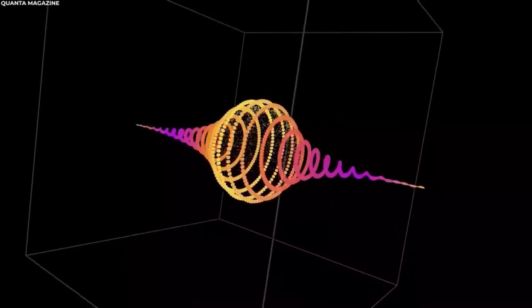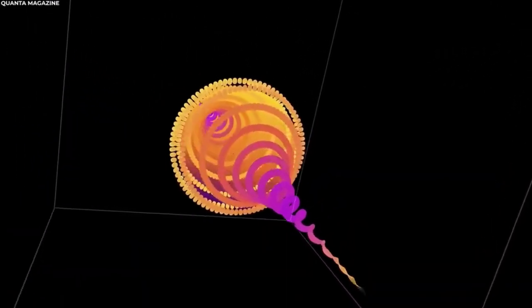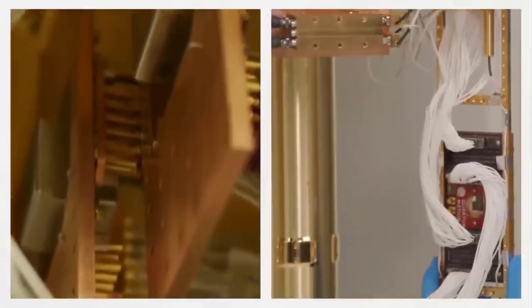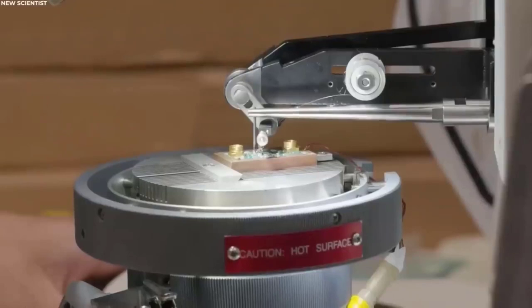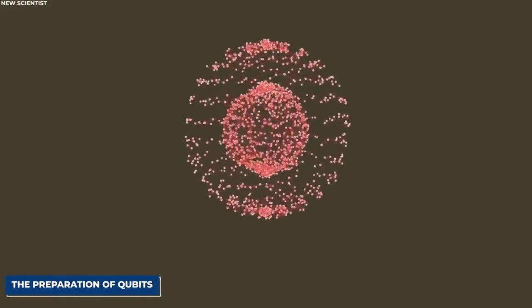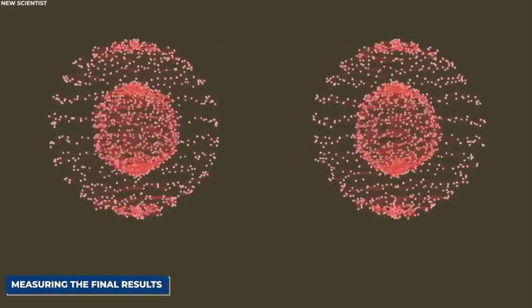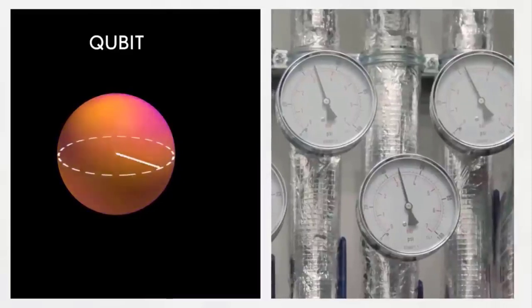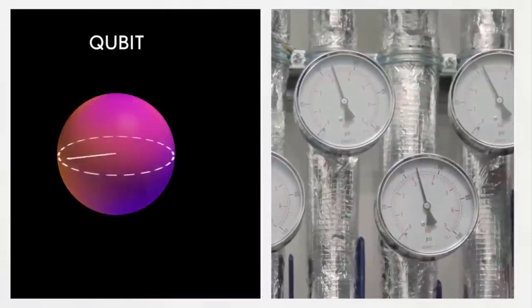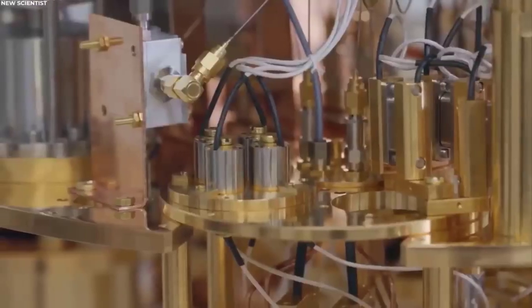Now let's talk about how these quantum computers actually work. They go through a series of complex processes involving the preparation of qubits, tweaking their states, and measuring the final results. To set things in motion, the qubits are chilled to insanely low temperatures, almost absolute zero. This chilly environment helps minimize any interference from the surrounding world, ensuring that the qubits stay stable and focused on the task at hand.